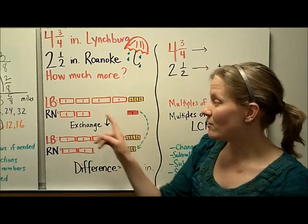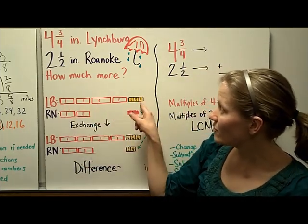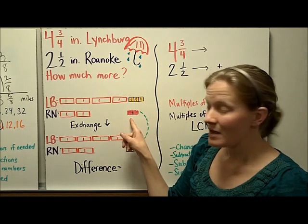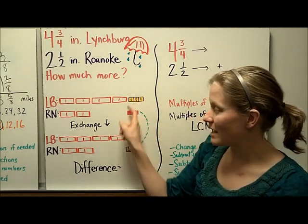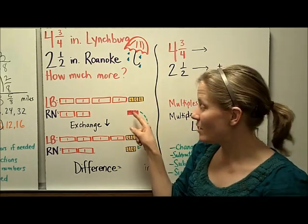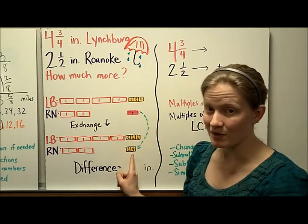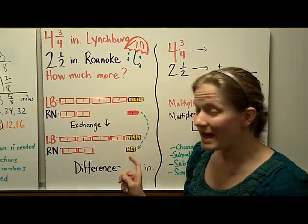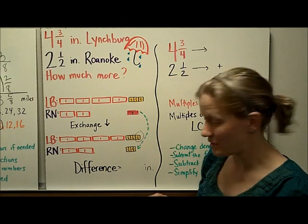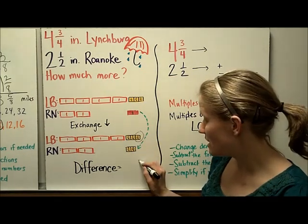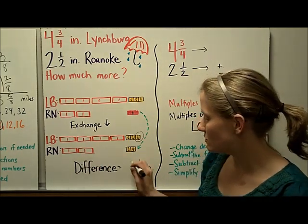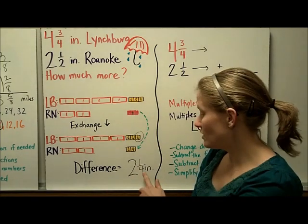So we can draw it with a model. We have the 4 3/4 inches to show for Lynchburg, and the 2 1/2 inches for Roanoke. Now, I can't compare these yet because they are not the same color or denominator. So I'm going to make an exchange and turn my pink 1/2 piece into 2/4 because 1/2 is equivalent to 2/4. And now I can compare. I can find the difference by seeing that there's 1 extra fourth piece here, or doing 3/4 minus 2/4 is 1/4. And then I can compare my whole numbers. 4 minus 2 is 2. So the difference is 2 1/4 inches.